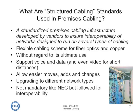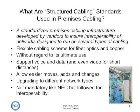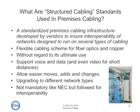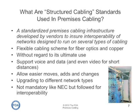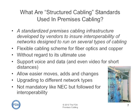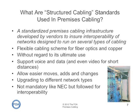What we're talking about here is basically a standardized premises cabling architecture developed by vendors — the people who make it — to ensure the interoperability of networks designed to run on this type of cabling. It's a flexible cabling scheme for fiber optics and copper, designed to be installed without regard to its ultimate use, because it can support voice, data, and even video for short links. Because it's standardized, it allows easier moves, adds, and changes and upgrading to different network types. It's not mandatory like the National Electric Code, but it's generally followed for interoperability.